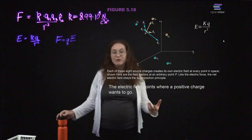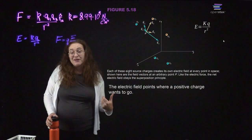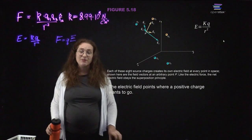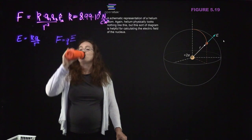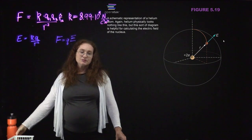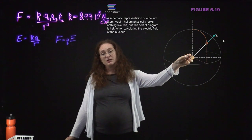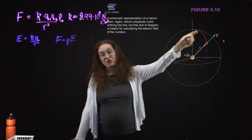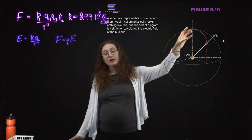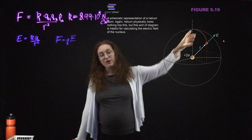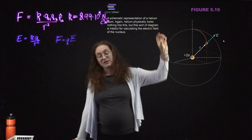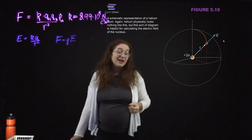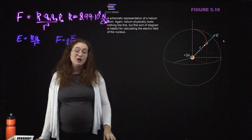I'm describing this anthropomorphically — obviously electrons don't have feelings — but I think it helps to imagine how an electric charge would get pushed around. For a positively charged nucleus like helium, the electric field from that nucleus points away from it, independent of whether there are electrons inside the atom or whether it's an ion.